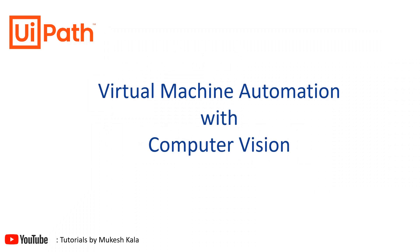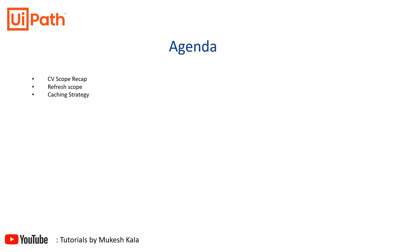Welcome back to the channel. This is the next video in the virtual machine automation series with computer vision. The agenda for this video covers a recap of the CV scope discussed in the first part, what exactly a refresh scope is, its importance, and how it is handled in the new CV scope — and how to make use of the new caching strategy available in the CV scope.